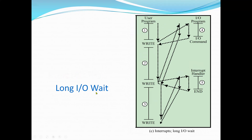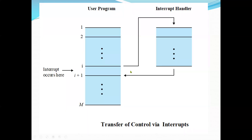This illustrates the long I/O wait scenario. The user program has a write call that goes to the I/O program, which executes and finishes, then comes back to continue. For a user program, an interrupt normally suspends the normal sequence of execution. For example, the processor is executing steps one and two, then an interrupt occurs and the processor handles the interrupt handler, and after finishing that task it comes back and continues where it left off in the user program.